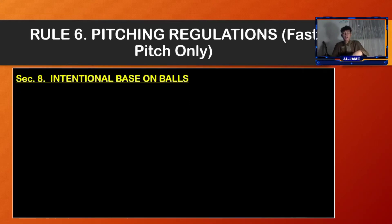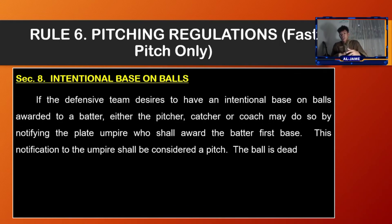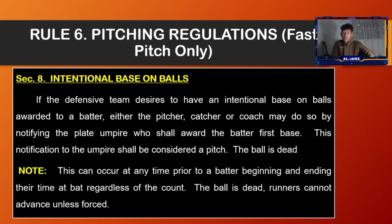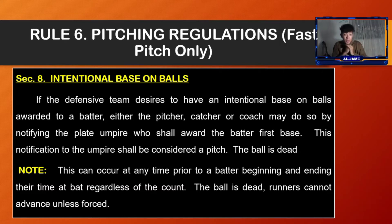Section number eight, intentional base on balls: if the defensive team desires to have an intentional base on balls awarded to a batter, either the pitcher, catcher, or a coach may do so by notifying the plate umpire, who shall award the batter first base. This notification shall be considered a pitch and the ball is dead. This can occur at any time prior to the batter beginning or ending their time at bat, regardless of the count. Runners cannot advance unless forced.